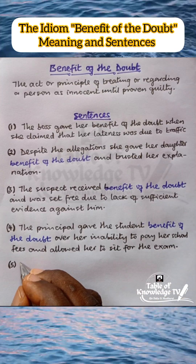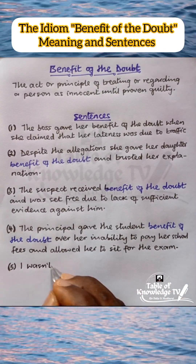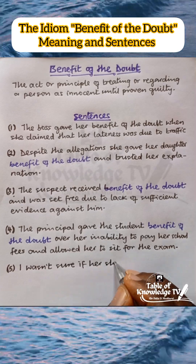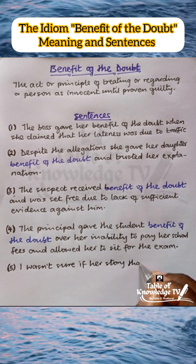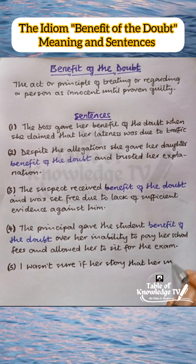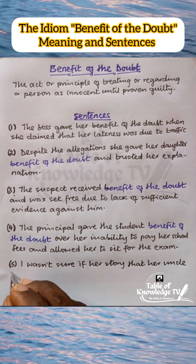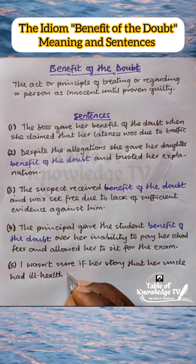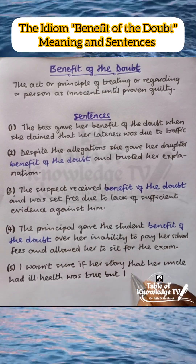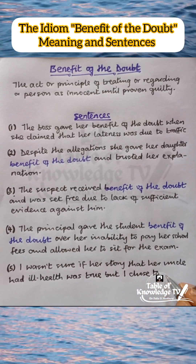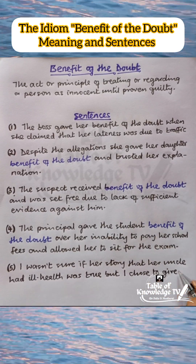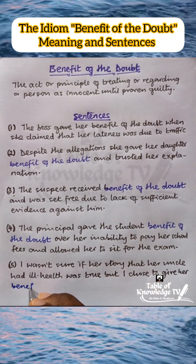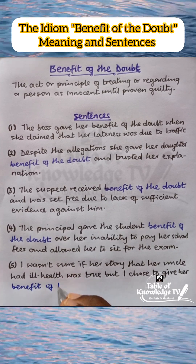Sentence 5: I wasn't sure if her story that her uncle had ill health was true, but I chose to give her benefit of the doubt.